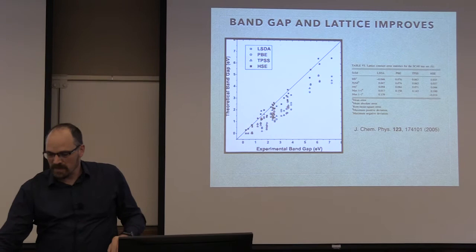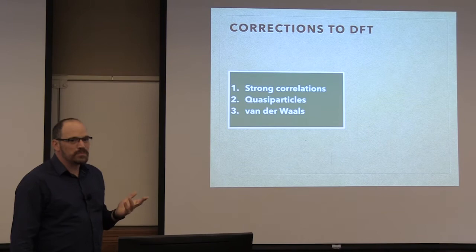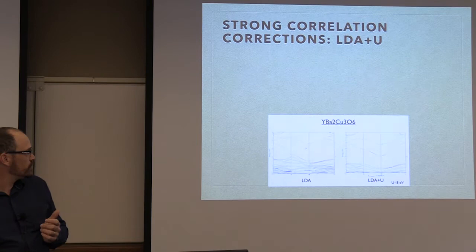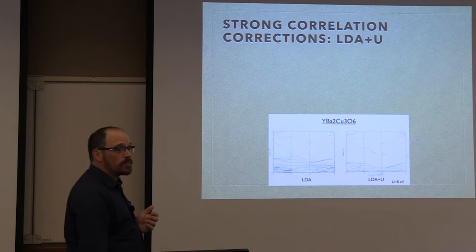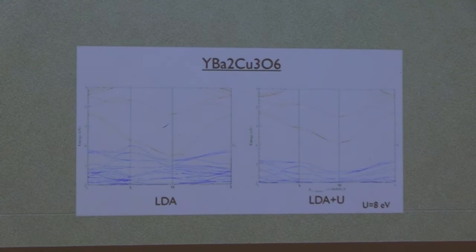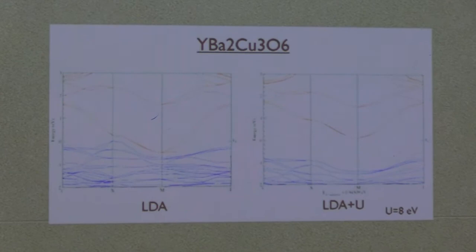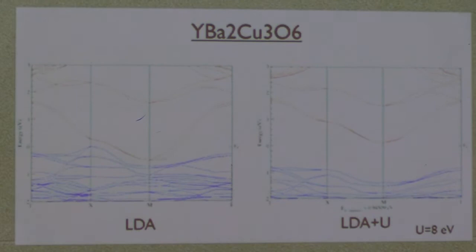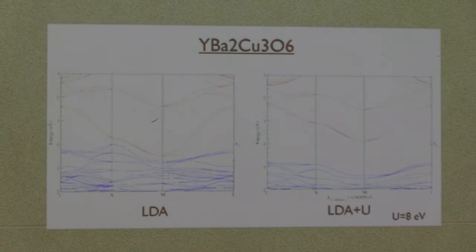We can go beyond DFT, because DFT remains pretty much a mean-field approach for the most part. So we can look at strong correlation. Strong correlation is something you find, for example, in superconductivity — systems with strongly localized electronic density, which DFT doesn't do so well with. Remember LDA was built for the uniform electron gas. In that case you would use something called LDA+U, which essentially adds an on-site interaction.